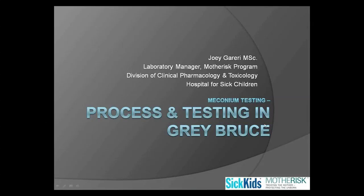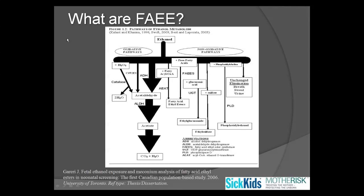Thank you very much, Dr. McLeod. Good afternoon everyone, good morning to my West Coast colleagues. I'm going to discuss some of the experience we've had in employing the fatty acid ethyl ester meconium test. One question often is: what are FAEEs? When ethanol is taken into the body, it will be processed by a number of different pathways. The majority of ethanol gets burned off to carbon dioxide and water and remains undetectable in any sort of laboratory test. What's historically been seen is ethanol present in urine or breath — for breathalyzer ethanol — but that's very transient. Fatty acid ethyl esters are ethanol combined with free fatty acids, which circulate for a longer period of time in the body and are incorporated into meconium.